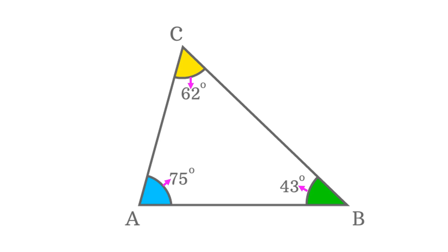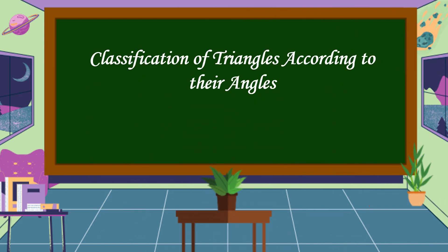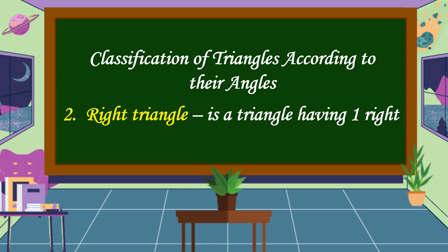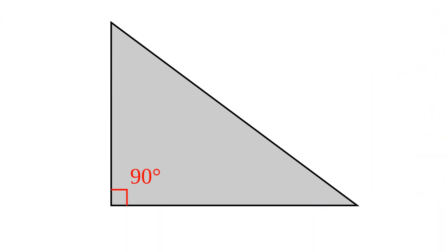The second classification of triangles according to their angles is a right triangle. A right triangle is a triangle having one right angle. This is a right triangle — one angle measures exactly 90 degrees and the two other angles are acute angles.